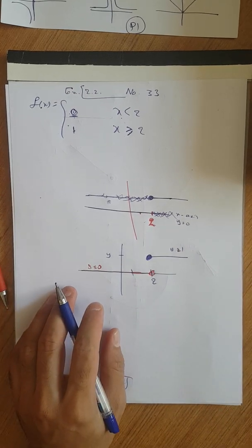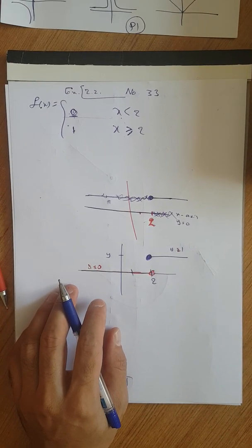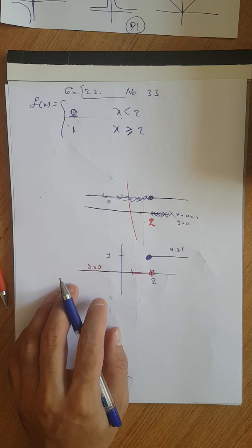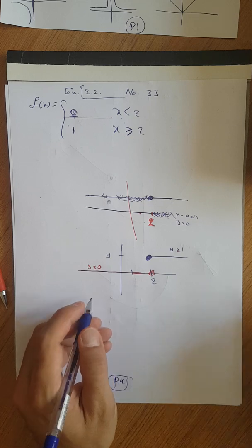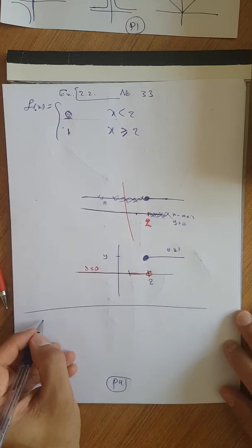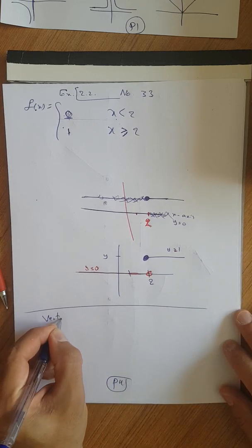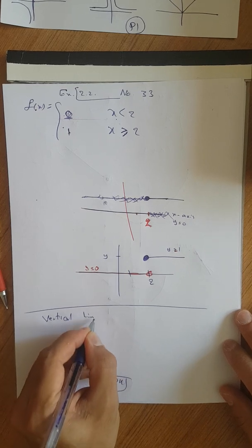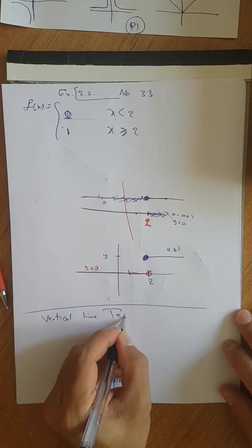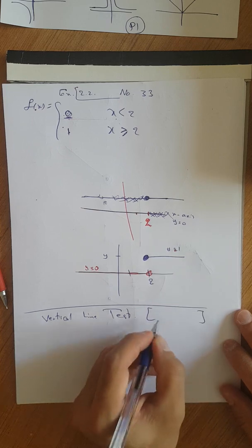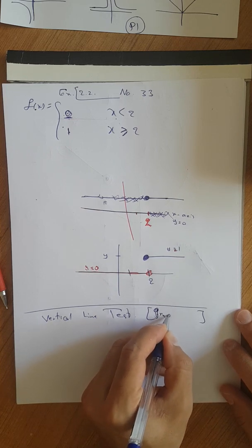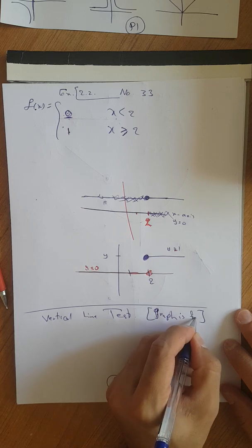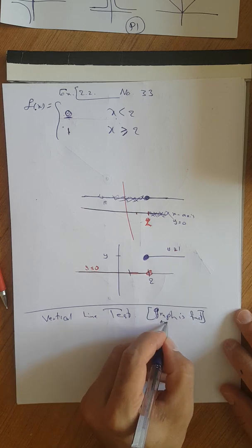In section 2.2 page 61, we have the vertical line test. I think it's easy for you. We use this test for showing that the graph is a function or not.